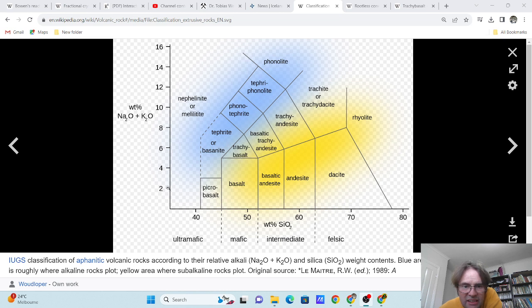When you get to ultramafic, you can get down to about three percent sodium and potassium. And if we go up to the phonolite, it gets up to 14 percent. So that's how much sodium and potassium you need.